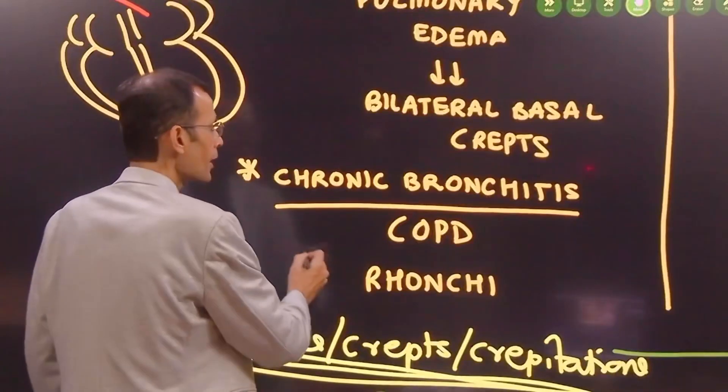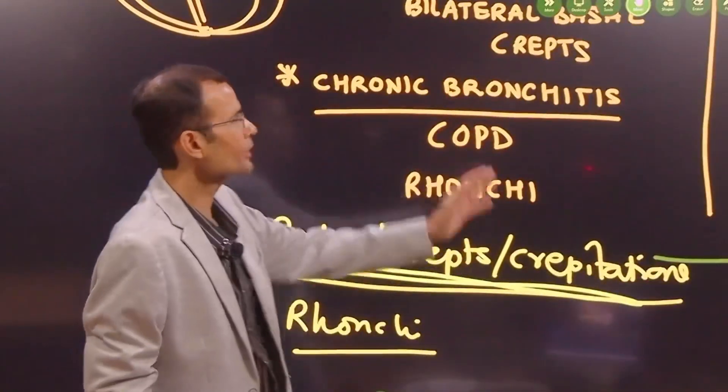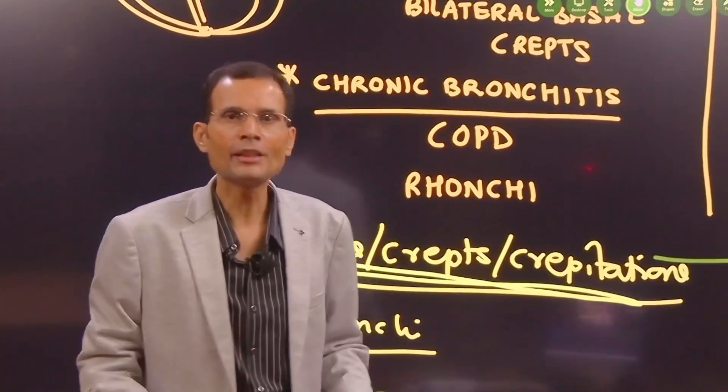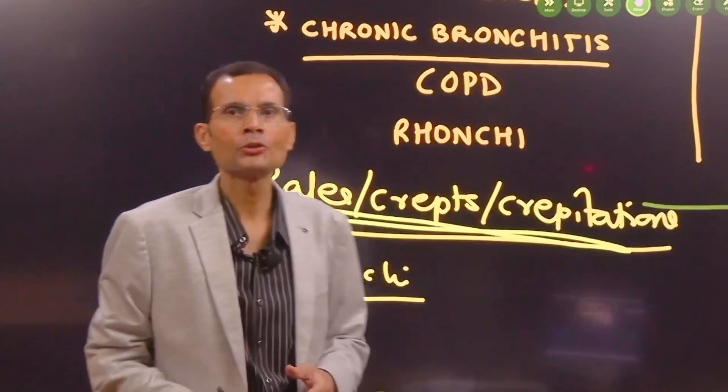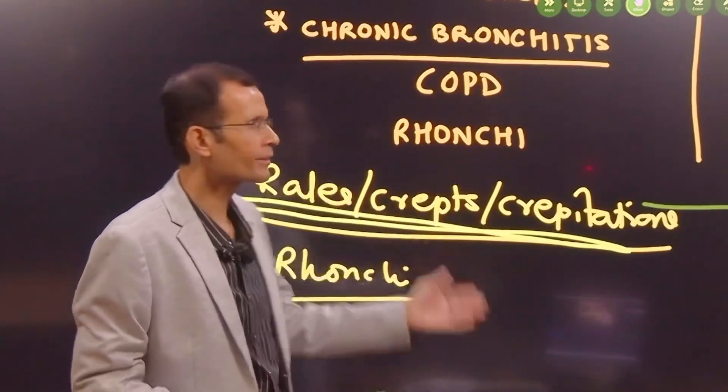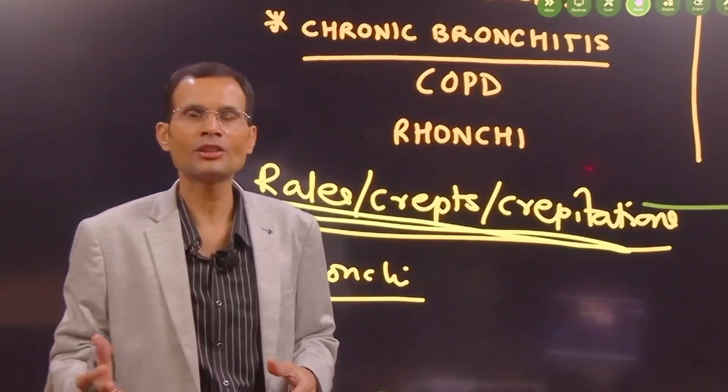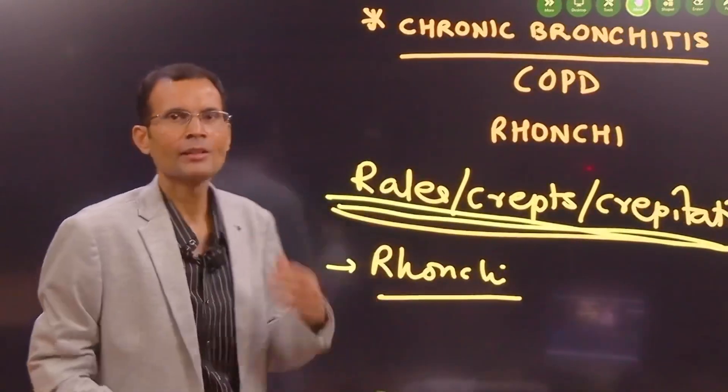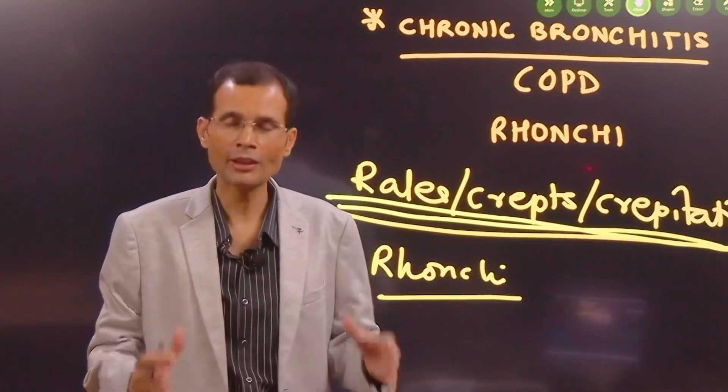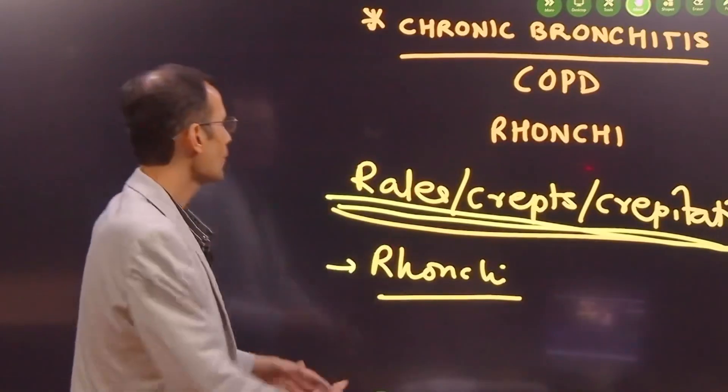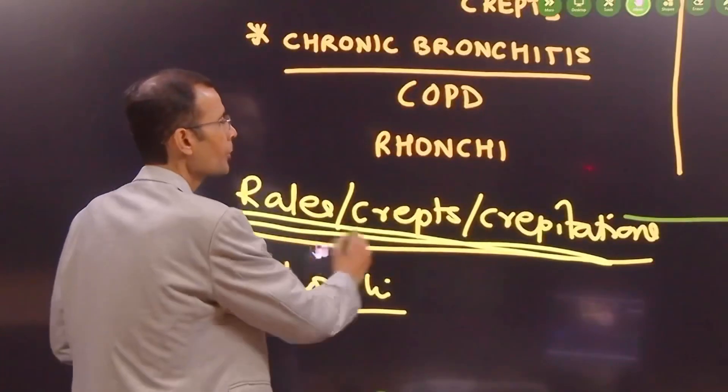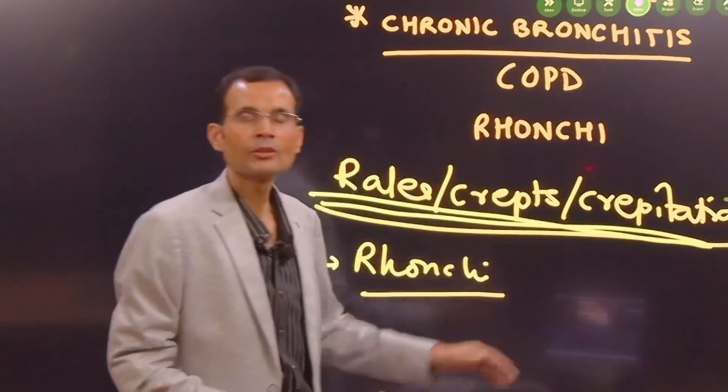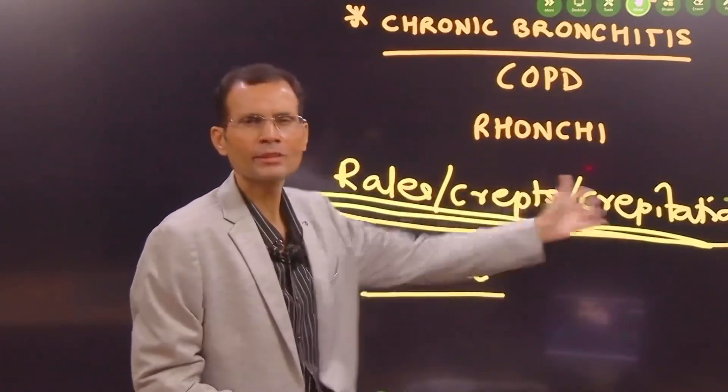Then the other option was chronic bronchitis with acute exacerbation. Well, it's a COPD, and in COPD you don't get rales or creps. There is other adventitious sound which is called as ronchi. So let's quickly summarize the foreign sounds or adventitious sounds on the respiratory system or on the lungs. There are two types of such abnormal sounds: one which is called as rales or creps or crepitations - same synonym - or some people call it crackles.